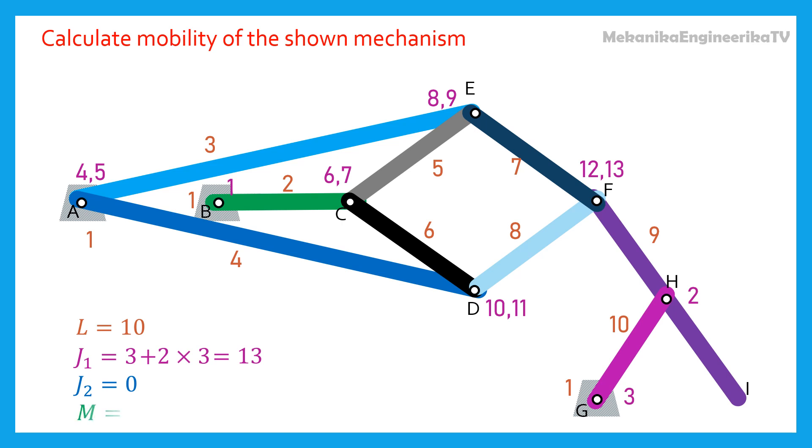Mobility is equal to 3 times 10 minus 1, minus 2 times 13, minus 0. Mobility is equal to 1.